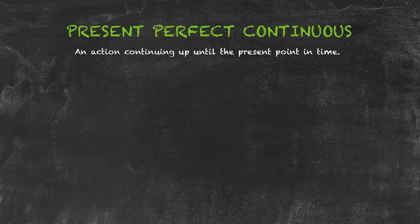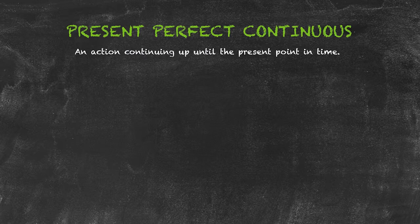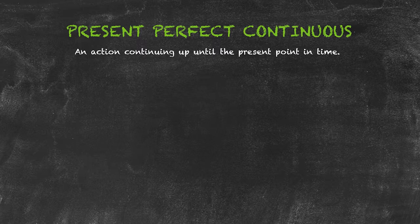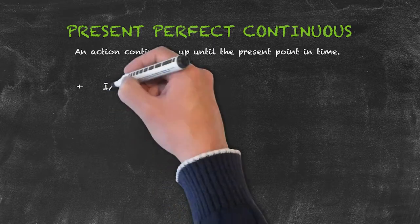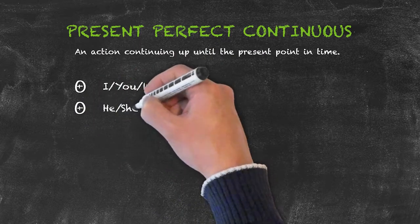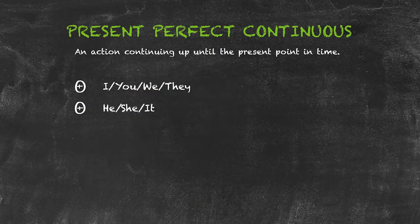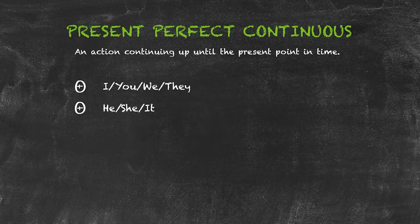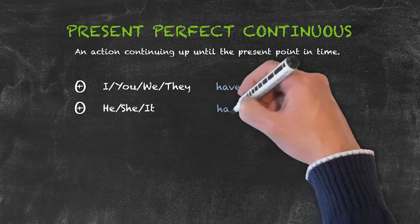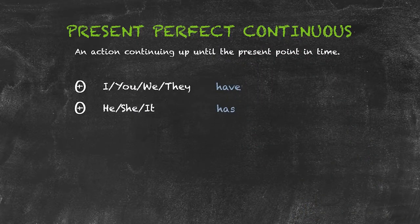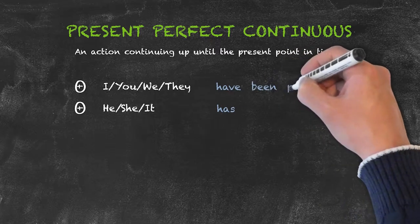For the form of this tense, again we're going to combine the various aspects of both the perfect and the continuous tenses. If we have a look, we always begin with our subjects. Then we have our two helping verbs: the helping verb to have for the perfect tenses, as well as the helping verb be for the continuous tenses.